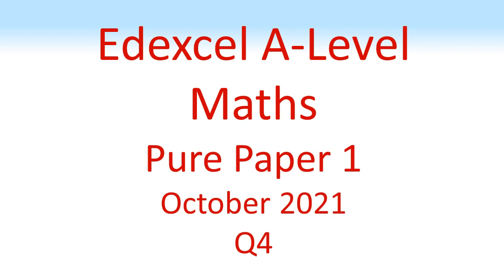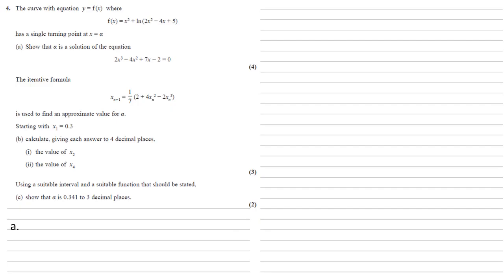Edexcel A-Level Maths, Pure Paper 1, October 2021, Question 4. The curve with equation y equals f of x, where f of x equals x squared plus log natural of 2x squared minus 4x plus 5, has a single turning point at x equals alpha.